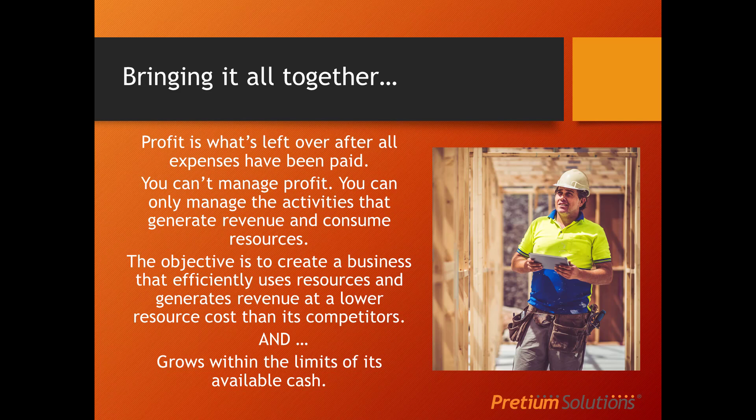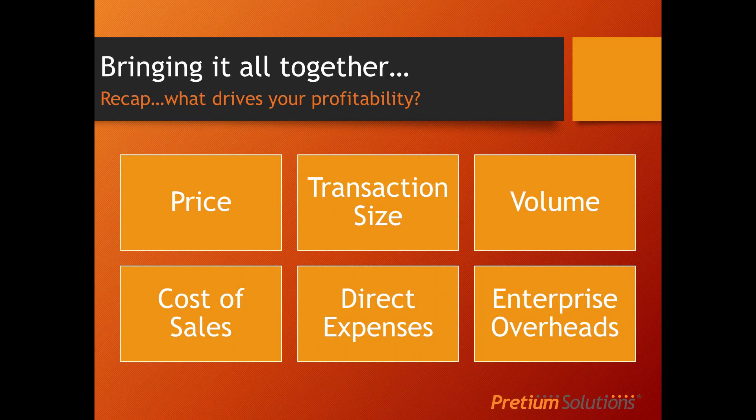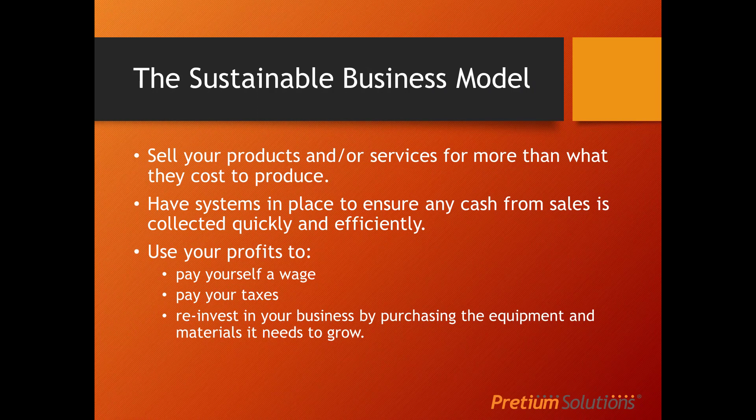So let's bring it all together. Profit is what's left over after all the expenses have been paid. You can't manage profit directly — you can only manage the activities that generate revenue and consume resources. The objective is to create a business that efficiently uses resources and generates revenue at a lower resource cost than its competitors, so you make more profit. The key drivers of profitability include price, transaction size, volume, cost of sales, direct expenses, and overheads — all of these factors combine to determine what your profit will be.